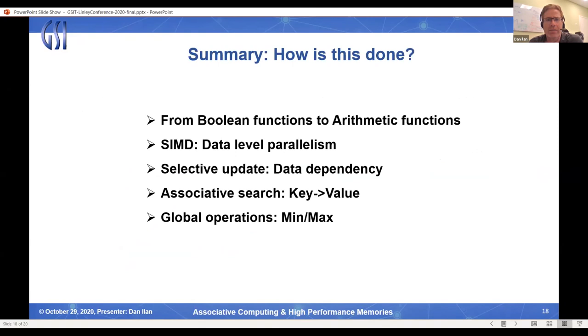Okay. So in summary, how did we do that? We started by using Boolean functions to code arithmetic functions that we use in the algorithm. Then we employed the data level parallelism across all the word processors in the processor to search and update all the nodes simultaneously. We use the selective update mechanism, according to the data, to be able to update only the nodes that needs to be updated. We use associative search key and value to find nodes that we are looking for. And we use the global operation, minimal or maximum global operation, to find basically the next current node.